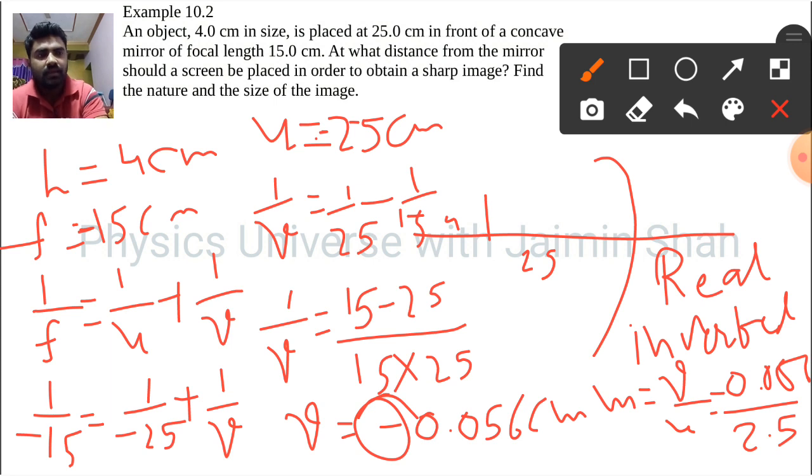So m equals v upon u, again 0.056 upon 2.5. We will get a very small value. Whatever the answer is here, that is the factor—the image is lesser by that factor, what we get in magnification.